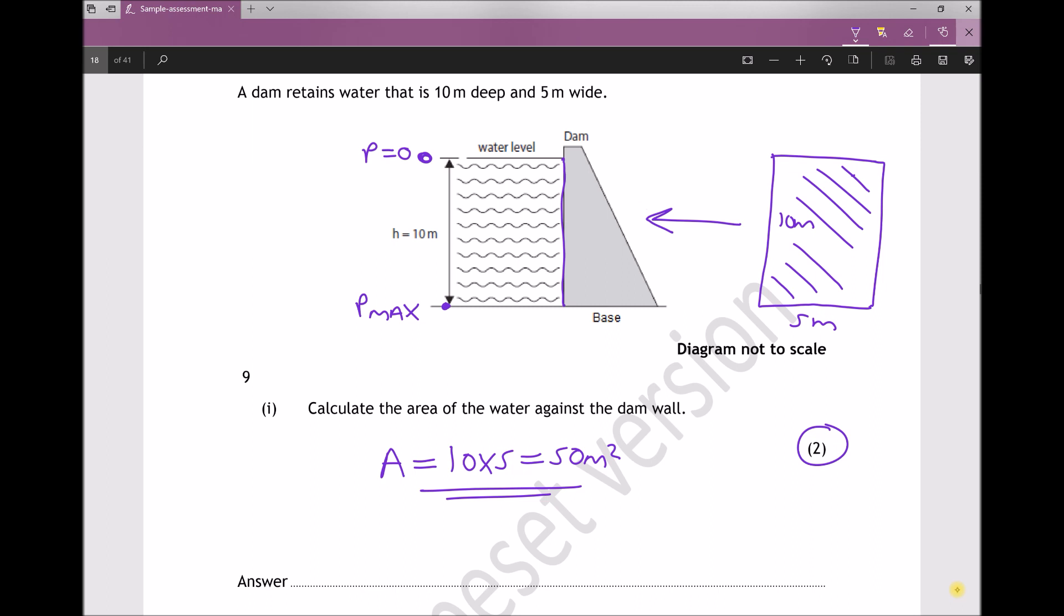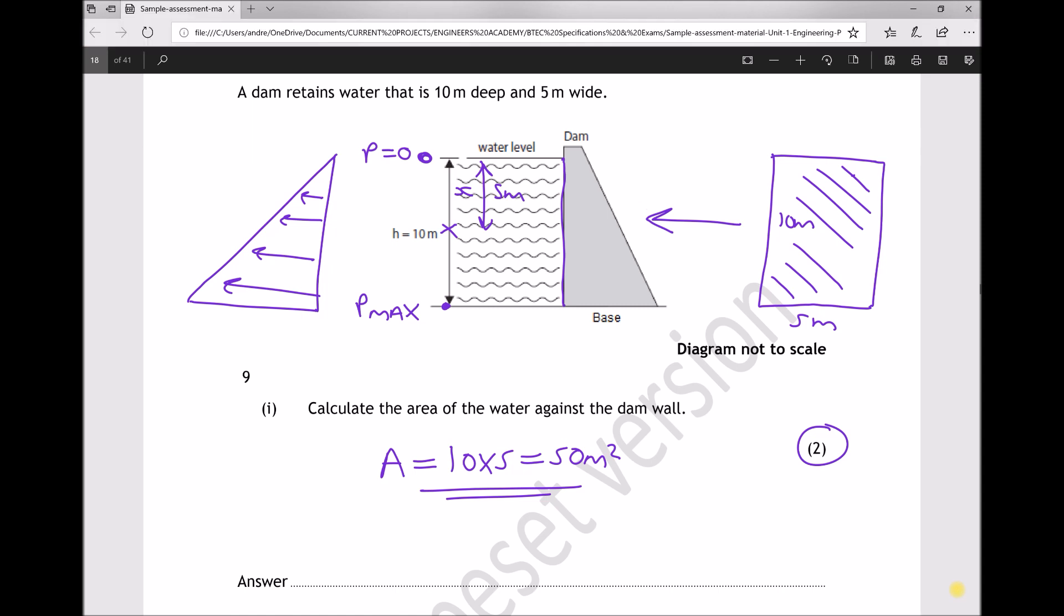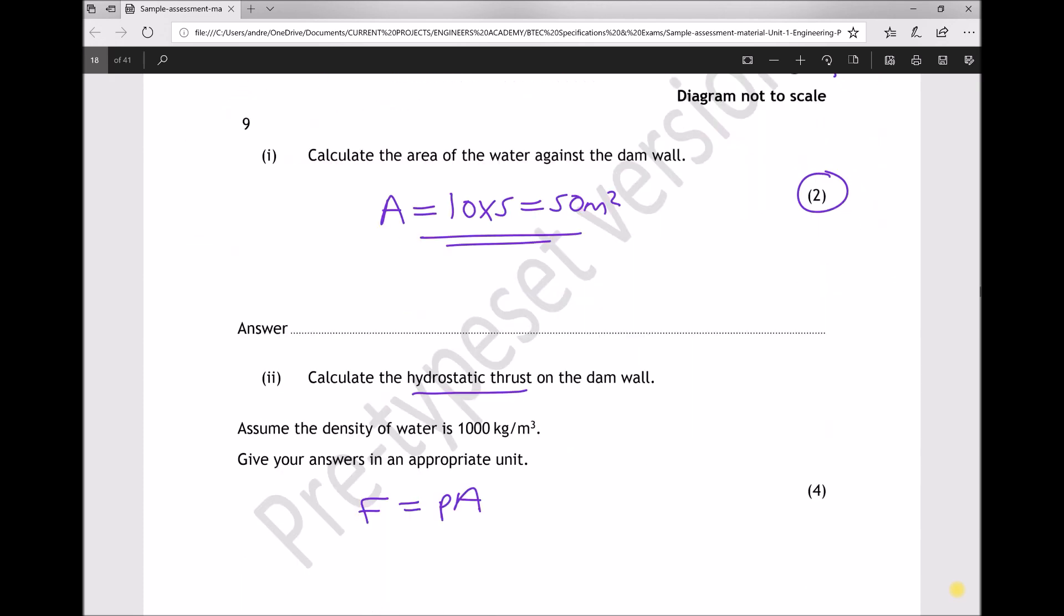The pressure is going to increase linearly from zero to a maximum value. If we were to draw the pressure profile it would appear something like that. So we want to use the average pressure or the pressure at a height of 5 meters, half the depth there. And we normally refer to that distance as x. So we need the pressure at a distance x or the pressure at 5 meters. We can then multiply that by our area to get our thrust force.